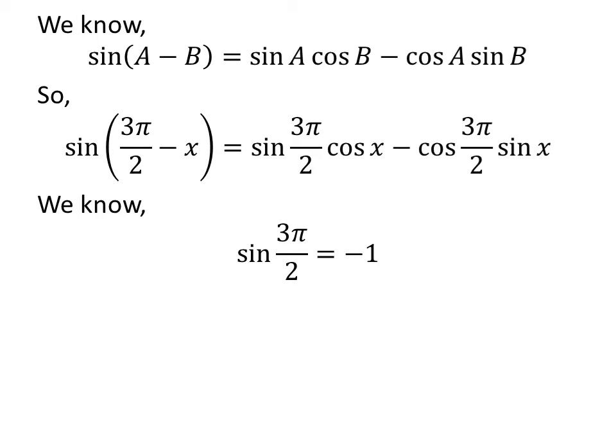We know the value of sine of 3 times pi upon 2 is equal to minus 1. The verification of this trigonometry identity is explained in the video appearing in the upper right corner. The link of the video is also given in the description section.